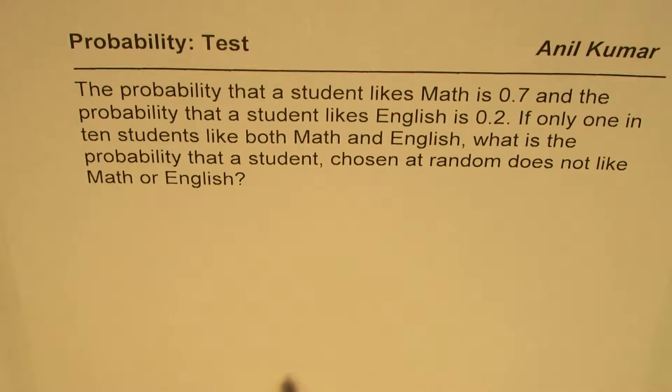If only 1 in 10 students like both math and English, what is the probability that a student chosen at random does not like math or English?